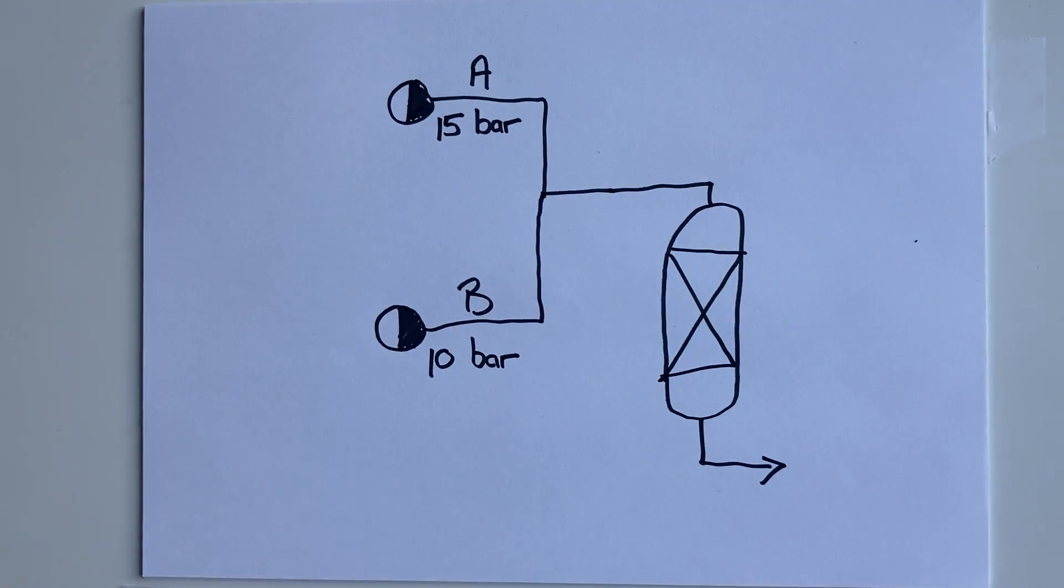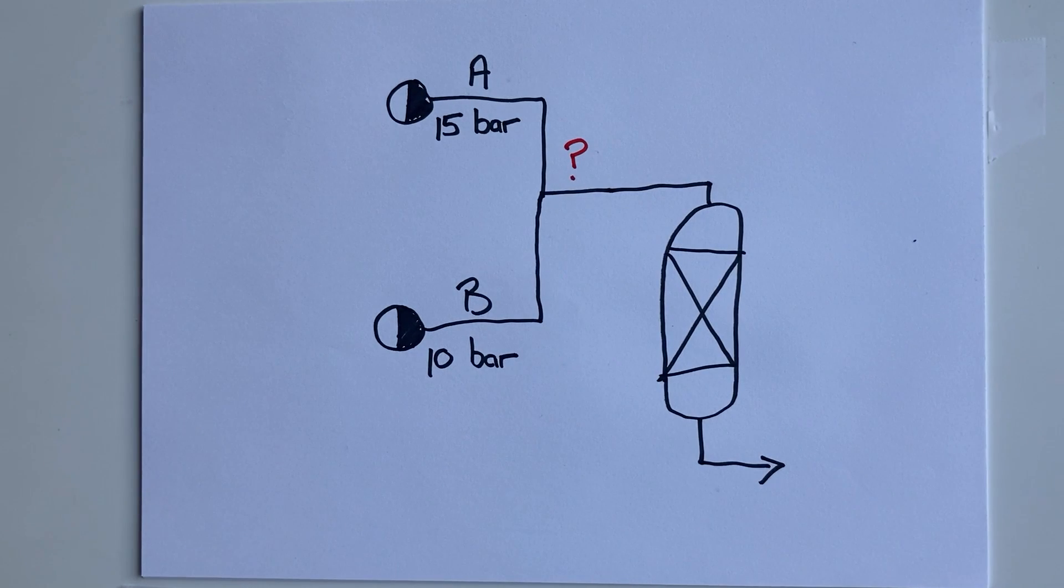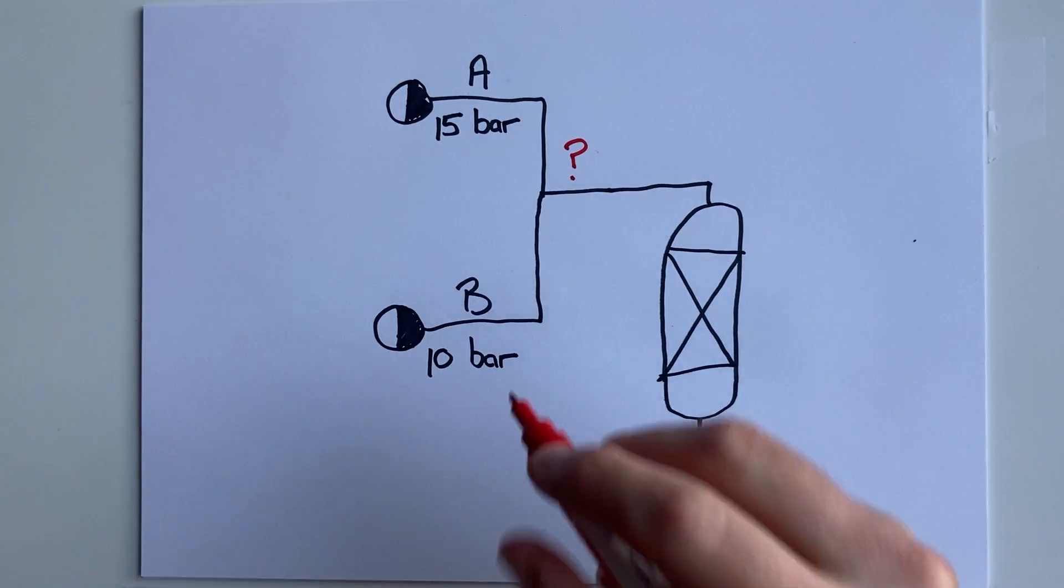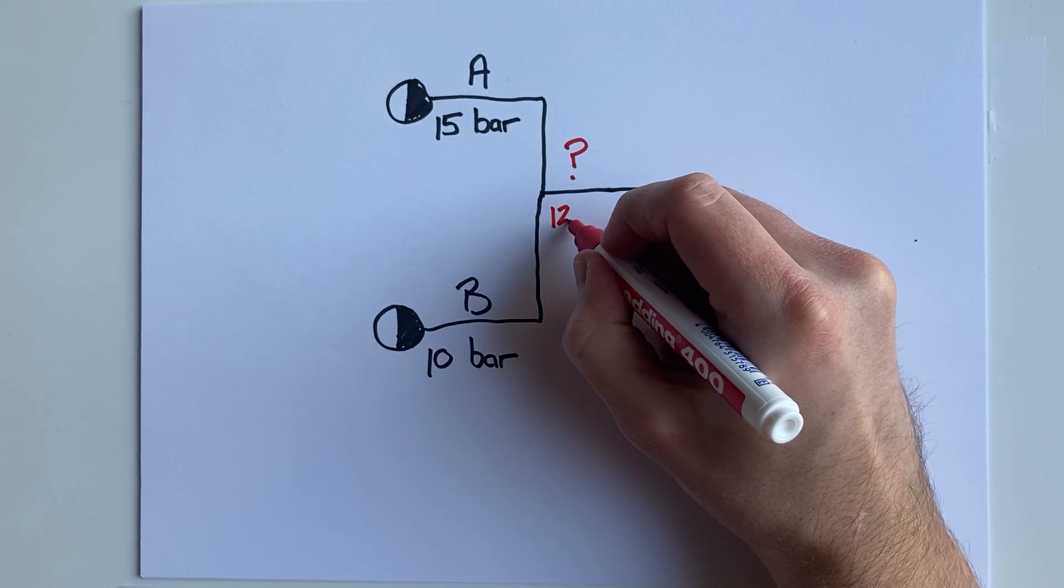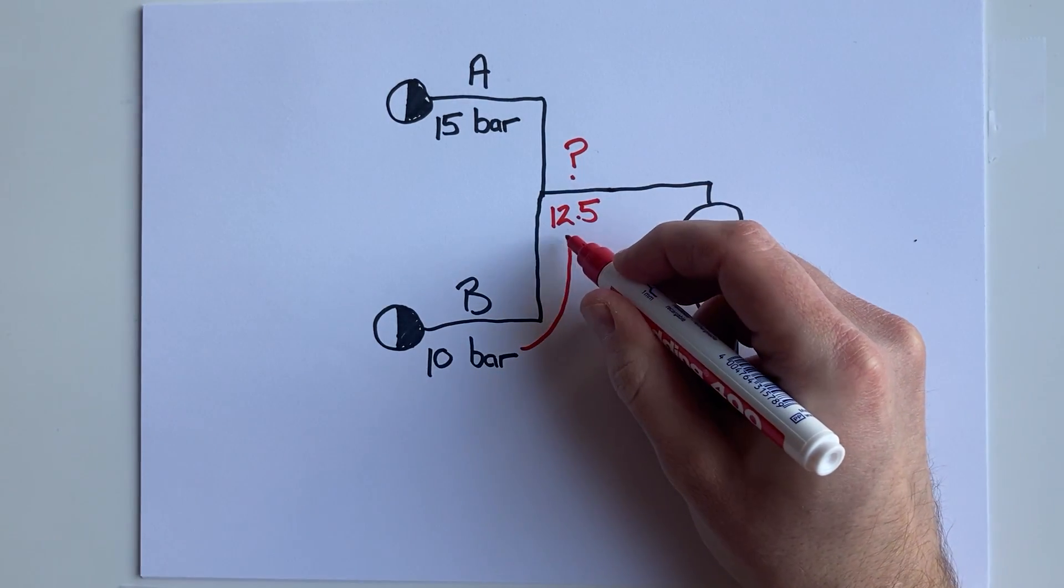So we would combine them and send them to a reactor. What was the pressure after they mixed? I asked some friends what they thought the answer was, and a few suggested that it was the average pressure of 12.5 bar.